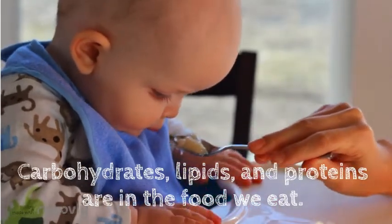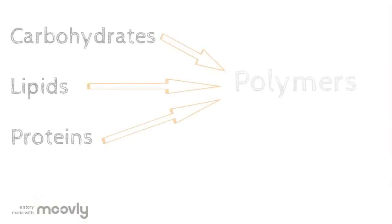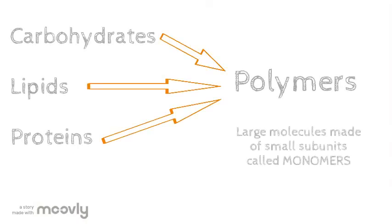Carbohydrates, proteins, and lipids enter our bodies when we eat food. These molecules are polymers, meaning that they're large molecules made of smaller subunits called monomers.